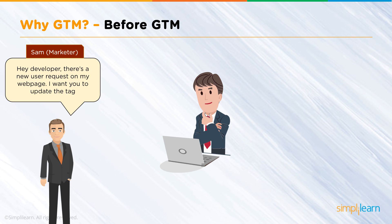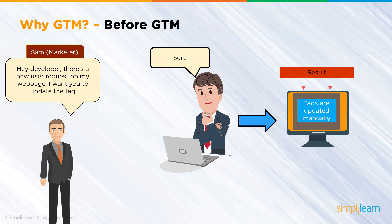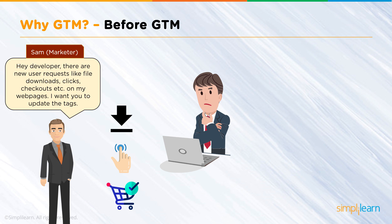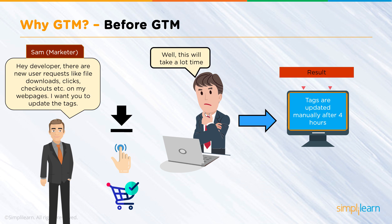Before we get into GTM, let's say you're communicating with your developer and there's a new user request on your web page — you want to update a tag. For a small update, your developer will probably just go ahead and do it. But what if you have multiple things to track — downloads, clicks, checkouts, videos? Your web developer is going to say all these requests are going to take time and need to go into the work queue.